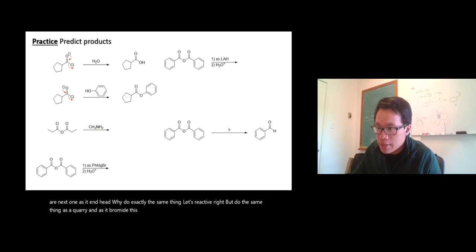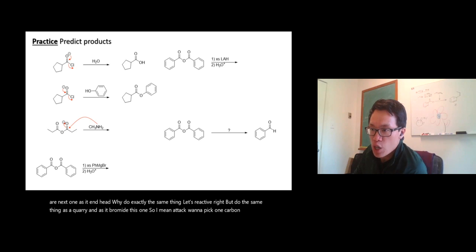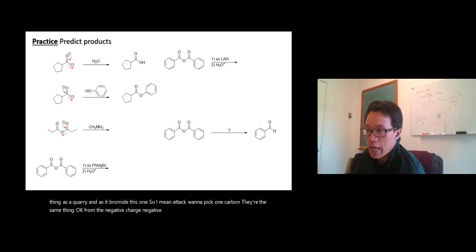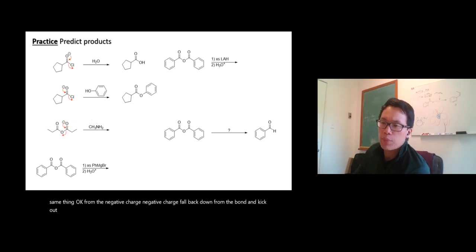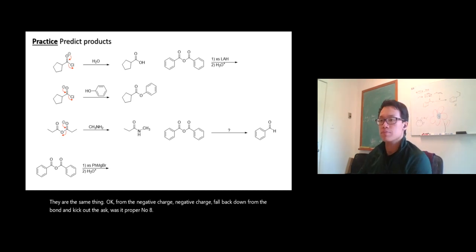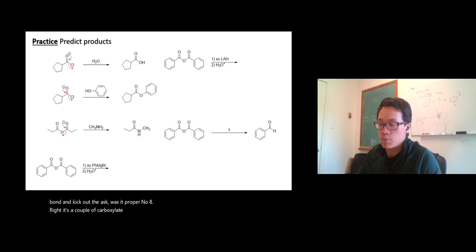This one, aminolysis, so amine attack. Pick one carbon, they are the same thing. Form negative charge, negative charge fall back down, form double bond and kick out the propanoate. It's a carboxylate coming out, that's a leaving group. So you get a nitrogen and a methyl group on it.